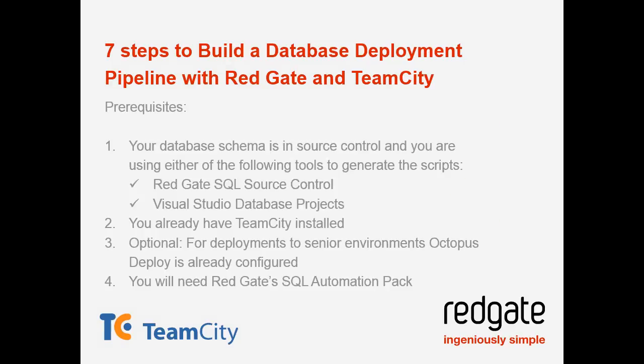These are the prerequisites for today's discussion. You're already source-controlling the database using either Redgate SQL Source Control or Visual Studio database projects. You already have Team City installed — we're not going to go through initial installation, just the configuration of the database part. Octopus Deploy is a nice cherry on the cake; it's not required, but we'll touch on how it links up. You will need to install the Redgate SQL Automation Pack on your Team City build server.